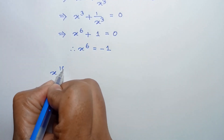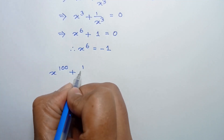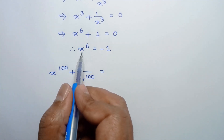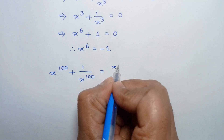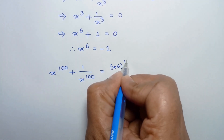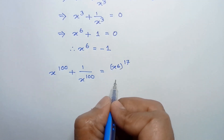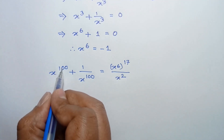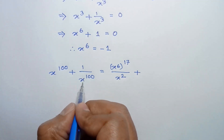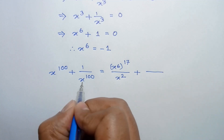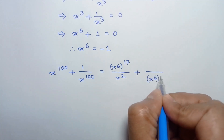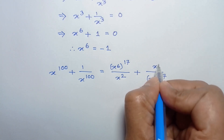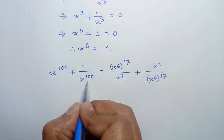Now, x to the power 100 plus 1 over x to the power 100. We know the value of x to the power 6, so x to the power 6 whole to the power 17 is x to the power 102. Divided by x squared, it will be x to the power 100. Similarly, 1 over x to the power 100 can be written as x to the power 6 whole to the power 17 is x to the power 102, so x squared will balance 1 over x to the power 100.